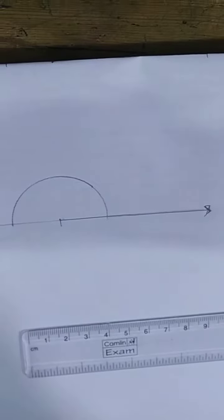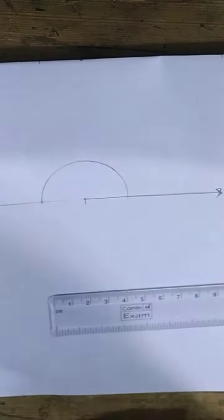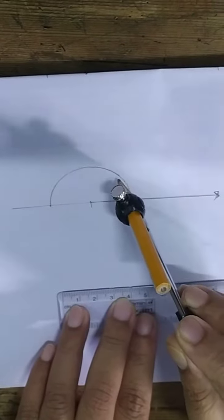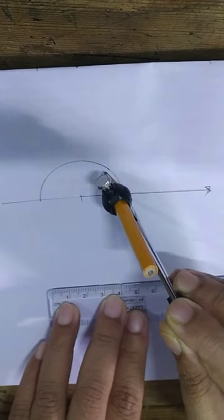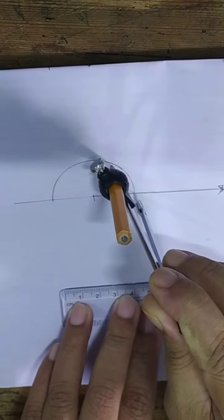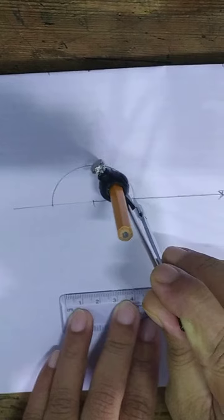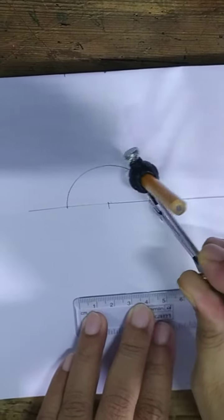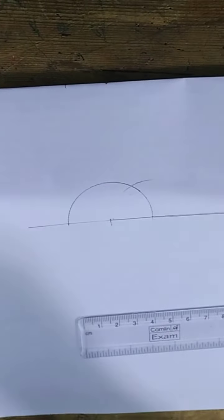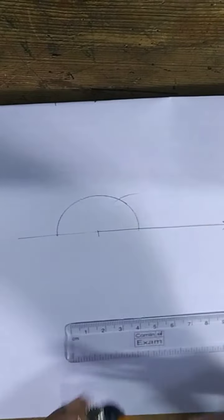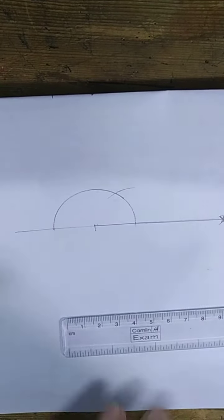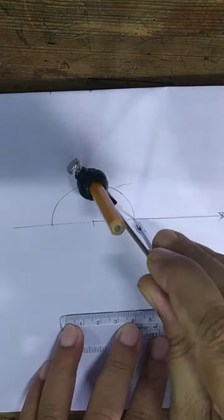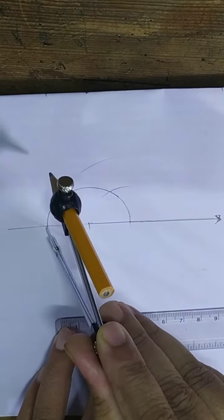You have seen how we draw the angle of 60 degrees. For drawing the angle of 60 degrees, we just take the arc. For 90, you have to just increase the distance. When you increase the distance, take two arcs in this way.